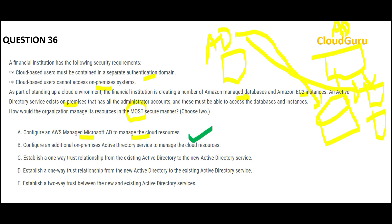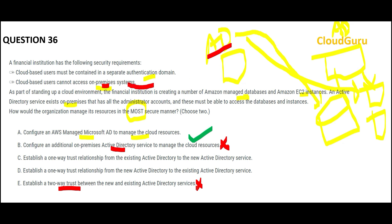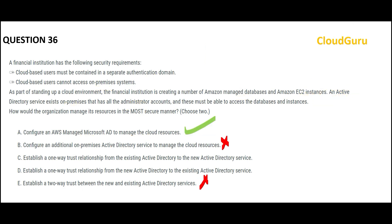Option B says we will put one more Active Directory on cloud, but the existing one is already there on-premises — adding another one there is totally wrong. Looking at option E, the keyword is that cloud users should not access on-premises, so two-way trust is not required. Two-way trust would allow cloud users to access on-prem resources, but the requirement clearly says not to do that. So option E is wrong.